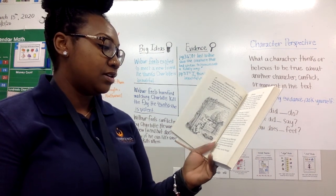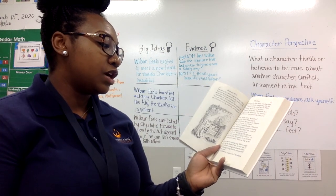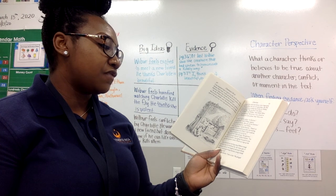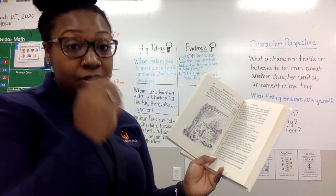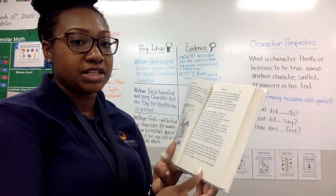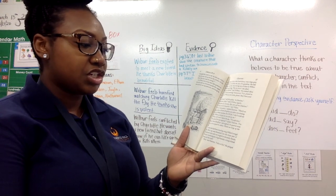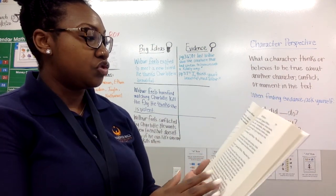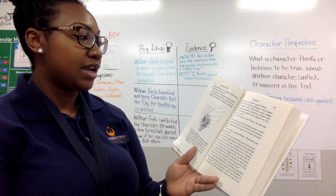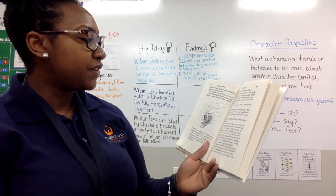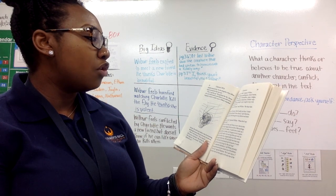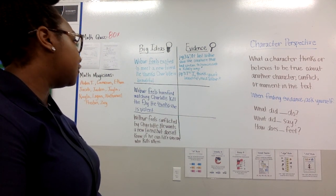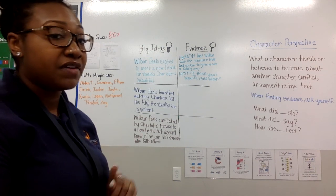A fly that had been crawling along Wilbur's trough had flown up and blundered into the lower part of Charlotte's web and was tangled in the sticky threads. The fly was beating its wings furiously, trying to break loose and free itself. I know when something is stuck in a spider web, it's really sticky and it's hard for insects to come out. 'First,' said Charlotte, 'I dive at him.' She plunged headfirst toward the fly, and as she dropped, a tiny silken thread unwound from her end. 'Next I wrap him up.' She grabbed the fly, then threw a few jets of silk around it. It rolled over and over, wrapping it so it couldn't move. Let's look at our next big idea. It says: Wilbur feels horrified watching Charlotte kill the fly. He thinks that she is violent. Let's see if we can find some text evidence as we read.